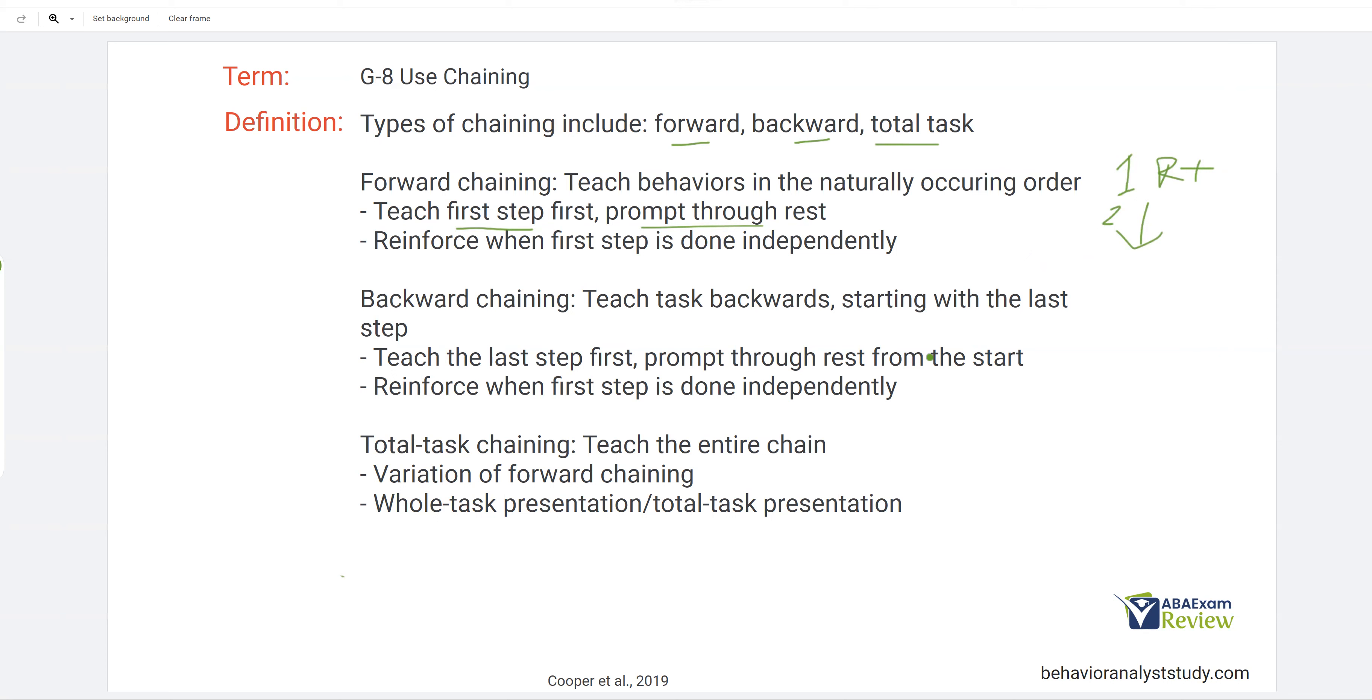Now, backward chaining is exactly what it sounds like. We're going to teach this task backwards, starting with the last step. So instead of starting at one, we might start at six and reinforce here. We're going to prompt all the way up to here until the final step is done independently. At that point, they receive reinforcement. Backward chaining is very good when maybe your learner is bad at starting tasks, starting new tasks, or they engage in a lot of escape. Because escape is going to function as reinforcement for completing that last step.